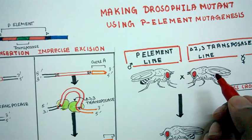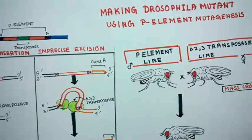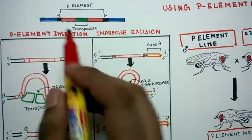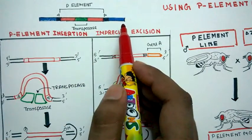Let's jump into what is P-element. P-element basically is a transposon. You can see this is the basic structure of a P-element.